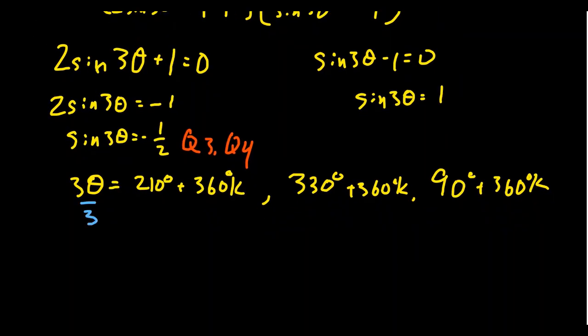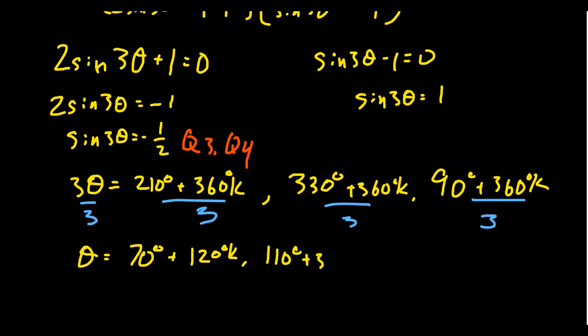So cut everything by a third. Notice this will cut the period by a third as well. We get that theta is going to equal, let's take 210 and divide it by 3. That's going to give us 70 degrees plus 120 degrees k. We're going to take 330, cut it by a third. That's going to give us 110 degrees plus 120 k. And then we have to take a third of 90 degrees, which is 30 degrees plus 120 k.